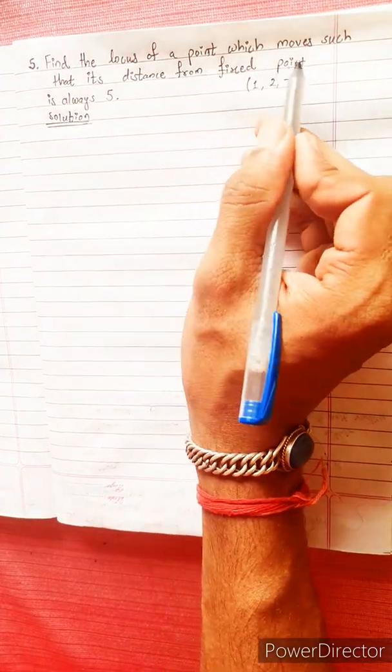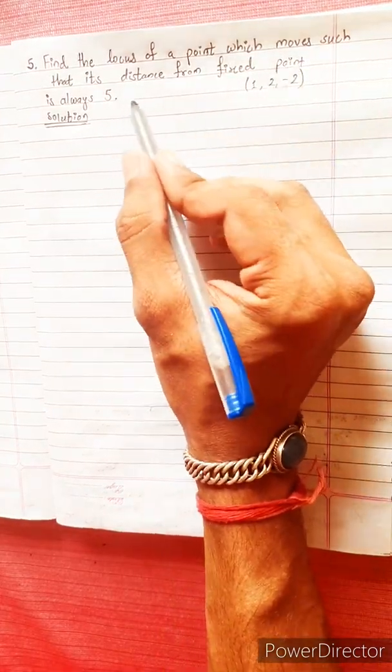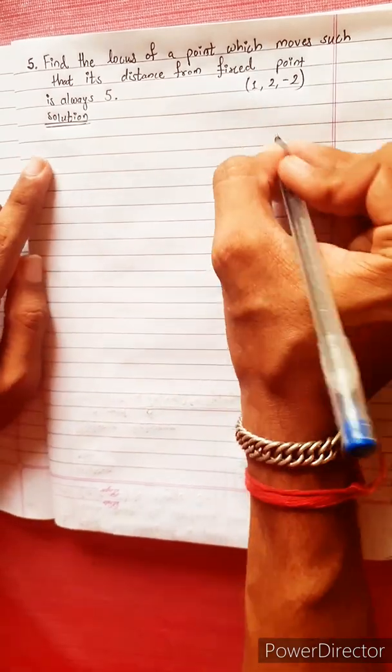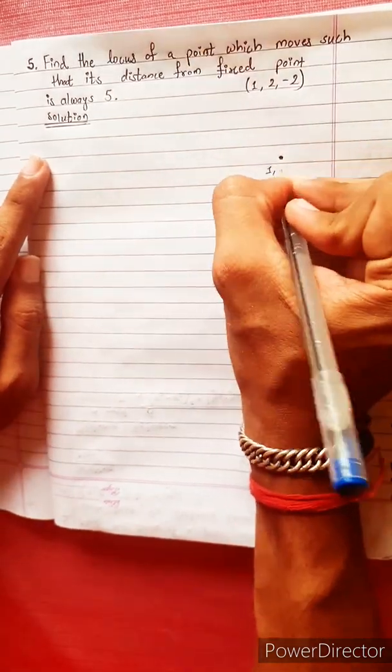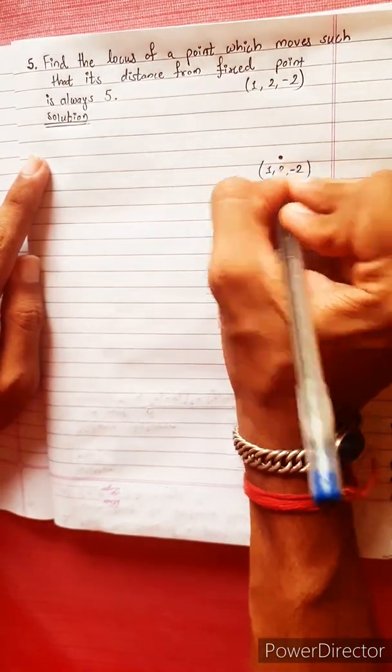Find the locus of a point which moves such that its distance from a fixed point is always 5. The fixed point is called (1, 2, -2).